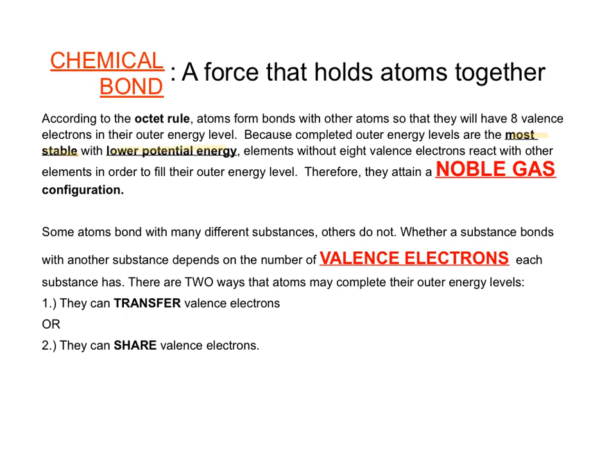That magic eight in the outer shell is considered a noble gas configuration because they are isoelectronic with noble gases — that stable outer energy level. Some atoms bond with a lot of different substances, some don't. Whether or not substances bond with others depends on the number of valence electrons.